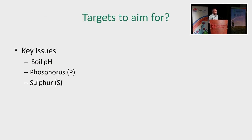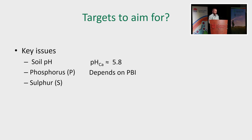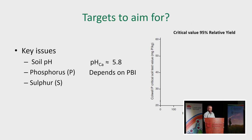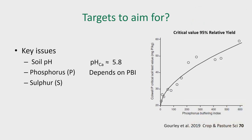So what are the targets to aim for? pH, phosphorus, and sulphur are key. We've got these targets from our research. Keep the pH aimed for around 5.8 if you want alkali to move down into more acid layers. Phosphorus depends on PBI — from the literature, Colwell P to hit 95% relative yield on the y-axis with PBI on the x-axis gives a relationship for Australian pastures. For around our area, about 30 is a good target to aim for — some would say higher. And for sulphur, about 8 parts per million is our target.